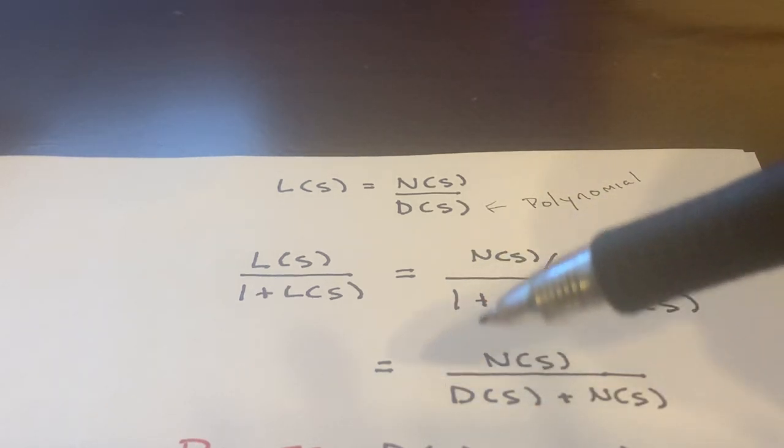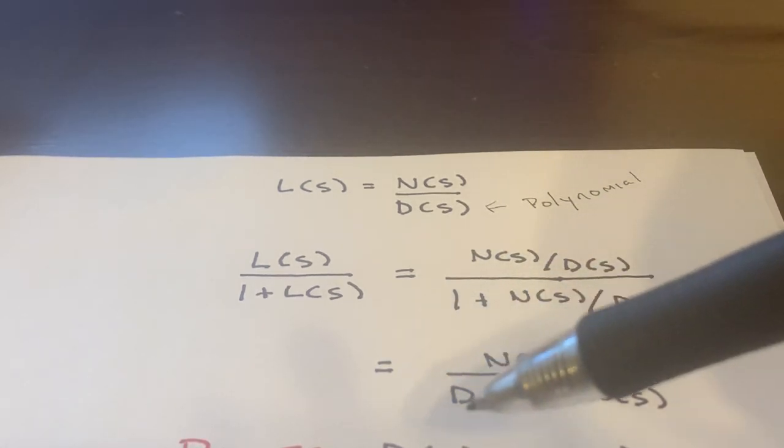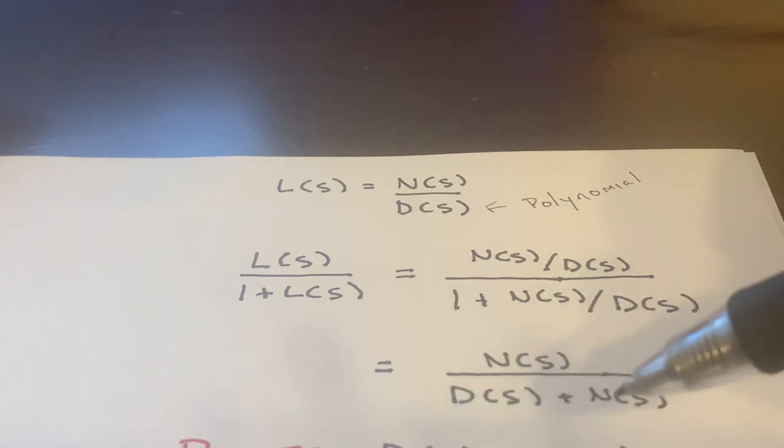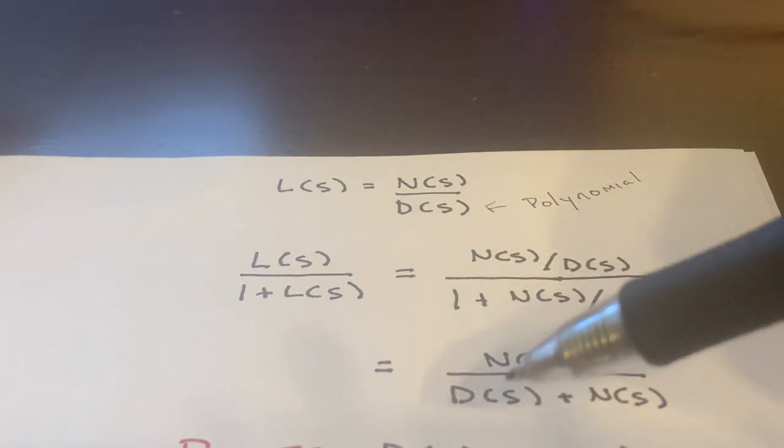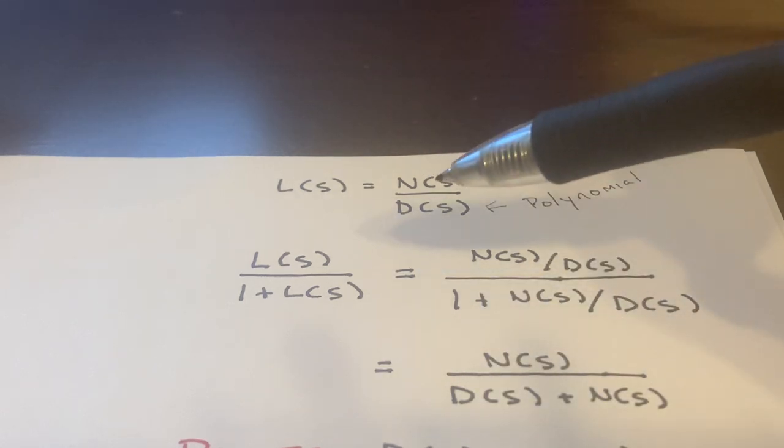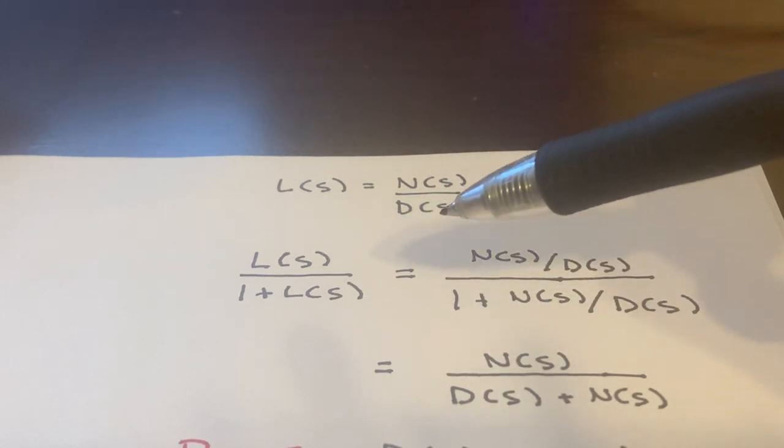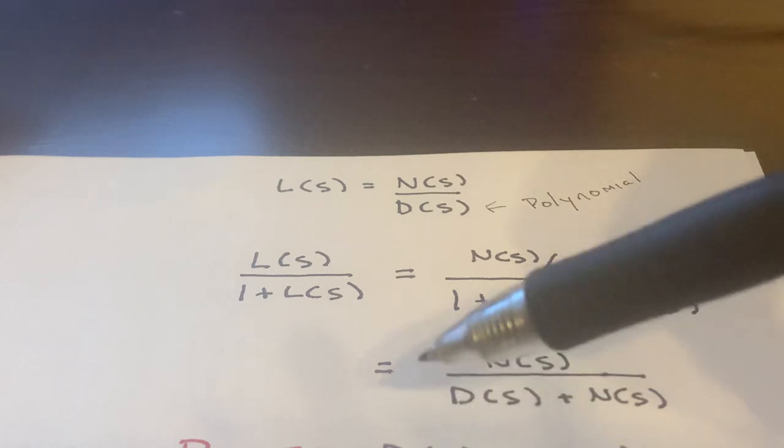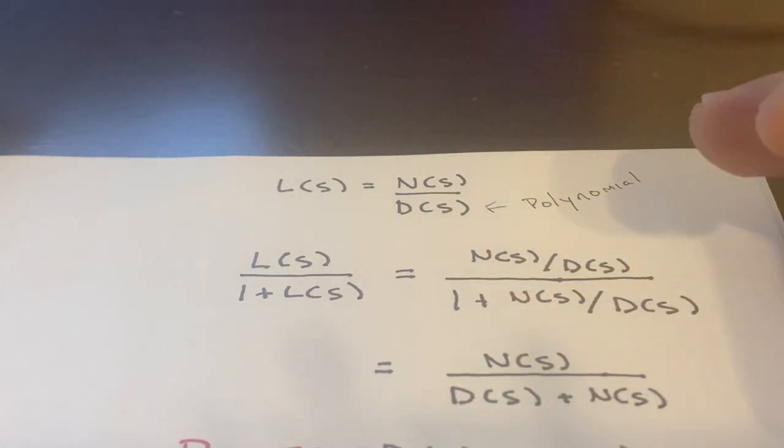So again, these are polynomials. So this might be like a K and this might be a tau S plus one and a K. It can all change depending on the system. But basically, this is the form where, again, that's a numerator polynomial, the denominator polynomial.